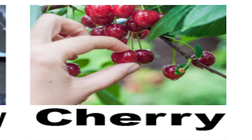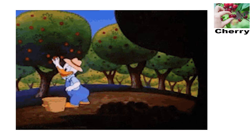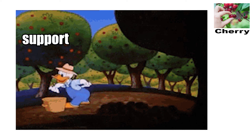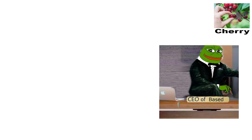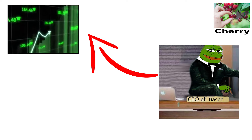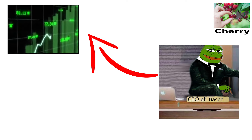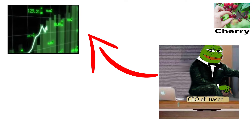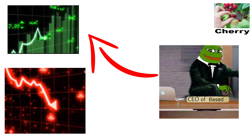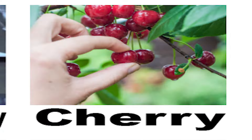Cherry picking. This fallacy involves selecting only the evidence that supports your argument while ignoring evidence that contradicts it. For example, our company has had five successful product launches, so we're clearly doing everything right — while ignoring the ten failed launches.